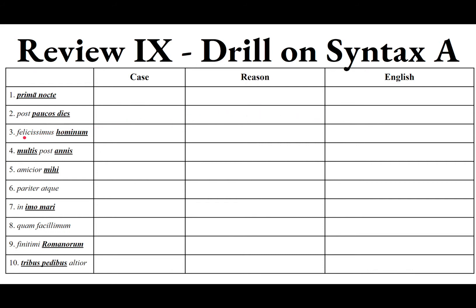Number three: felicissimus hominum. The case of hominum — from homo hominis, masculine — is genitive plural. The reason is partitive genitive: he is the most fortunate of people, of humans. He is the singular most fortunate out of the whole group of humans, homo sapiens. So: partitive genitive. Most fortunate of people.